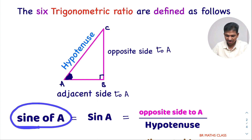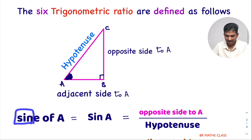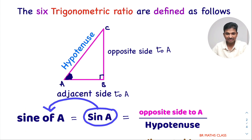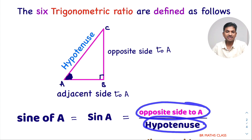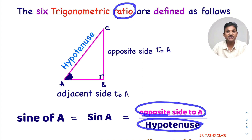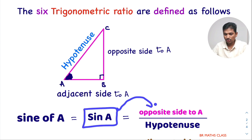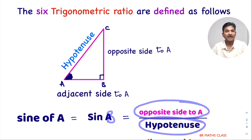The first trigonometric function is sine of A, simply written as sin A — we consider the first three letters. Sin A is defined as the opposite side to angle A divided by hypotenuse. This is a ratio of sides, that's why it's called a trigonometric ratio. Similarly, sin B would be the opposite side to angle B divided by hypotenuse.